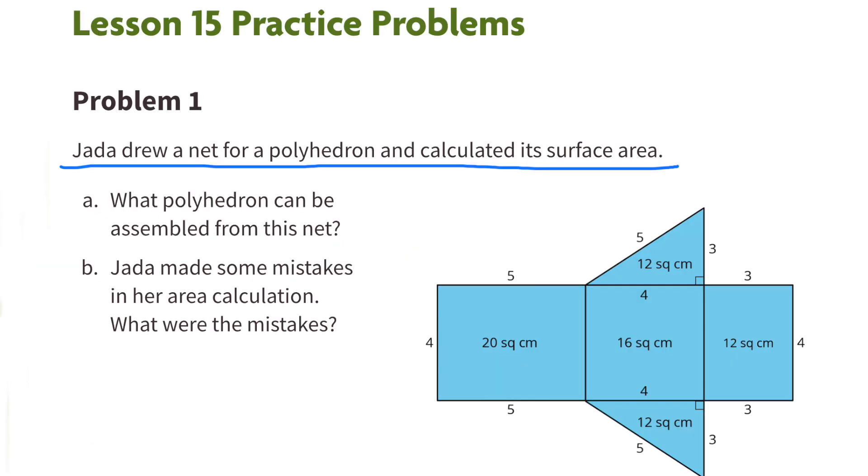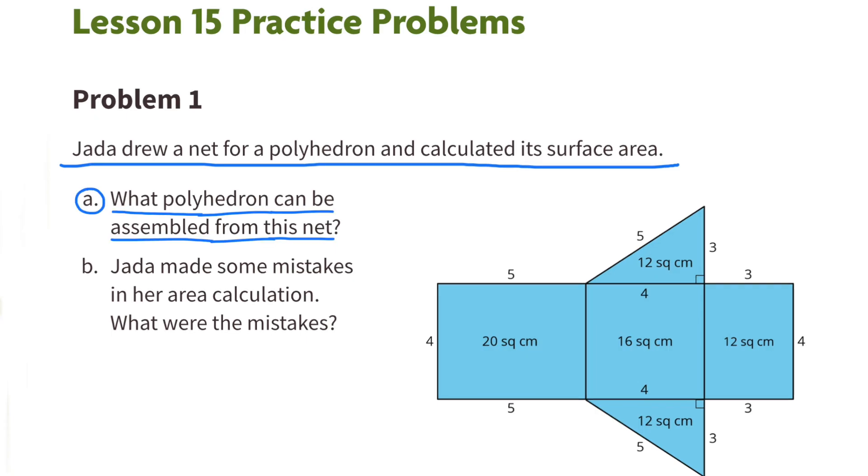Number 1. Jada drew a net for a polyhedron and calculated its surface area. Part A: What polyhedron can be assembled from this net? A triangular prism can be assembled from this net.